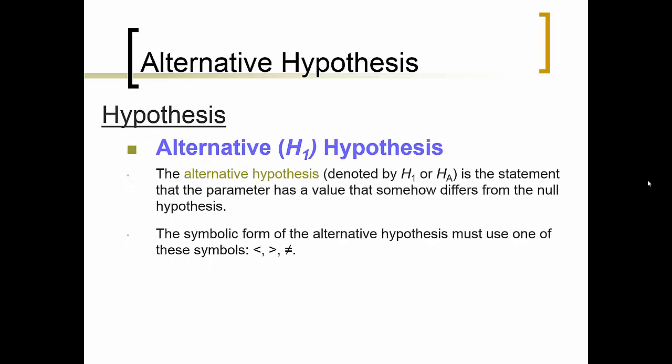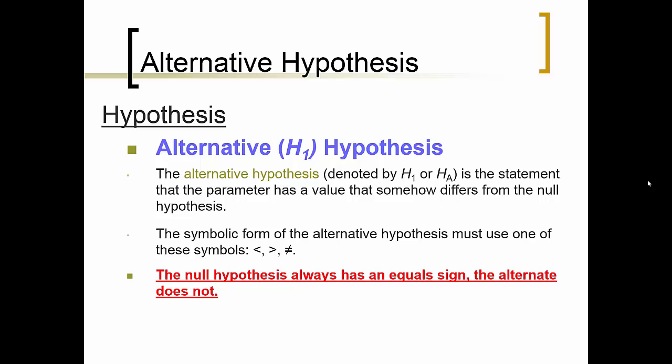The alternative hypothesis, denoted by H sub one or H sub A, is the statement that a parameter has a value that somehow differs from the null hypothesis. The symbolic form of the alternative hypothesis must use one of these symbols: less than, greater than, or not equal. The null hypothesis is always equal. The alternate is not.